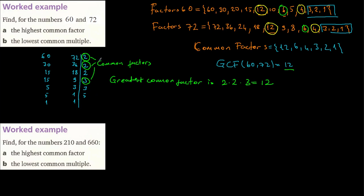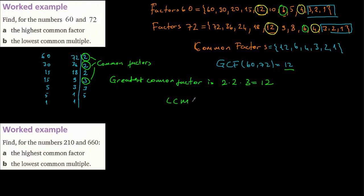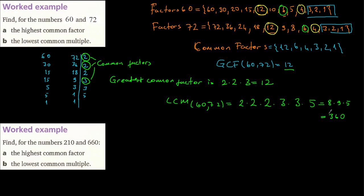Now for the Least Common Multiple of 60 and 72. Using all the prime factors found in the table, the LCM of 60 and 72 equals 2 × 2 × 2 × 3 × 3 × 5. That gives us 8 × 9 × 5 = 8 × 45 = 360. So the LCM of 60 and 72 is 360, and the GCF of 60 and 72 is 12.